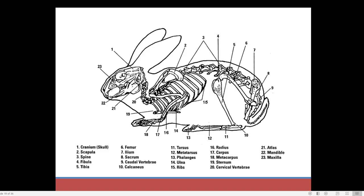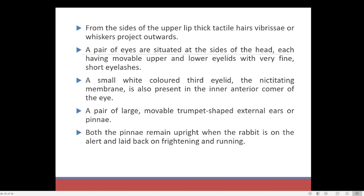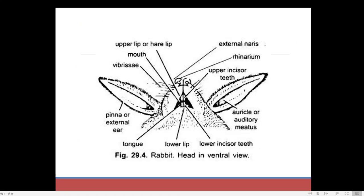Inside the ribcage the heart as well as the lungs will be present. From the side of the upper neck, thick tactile hairs called vibrissae project outwards. These longer hairs on the front of the mouth are known as vibrissae. They are highly sensitive to touch — these tactile hairs are known as vibrissae and help detect the surroundings easily, detecting any kind of vibration.